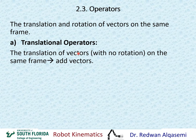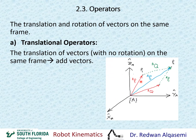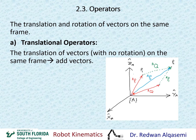For translational operators — the translation of vectors with no rotation on the same frame — we simply add vectors. Looking at this graph, we have frame A with axes x_A, y_A, and z_A. The red vector defines p1 relative to frame A. We then translate that red vector through the translation vector q relative to A, moving it to a new position shown in green.